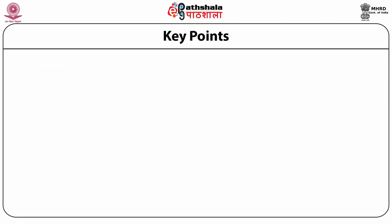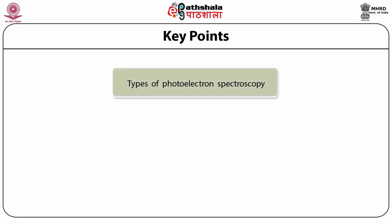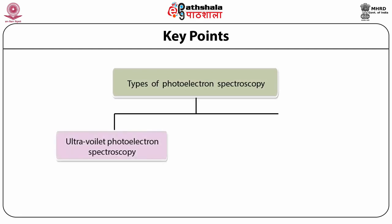Under the banner of photoelectron spectroscopy are two separate techniques for quantitative and qualitative measurements: ultraviolet photoelectron spectroscopy (UPS) and X-ray photoelectron spectroscopy (XPS). XPS is also known under its former name as electron spectroscopy for chemical analysis (ESCA). UPS focuses on ionization of valence electrons, while XPS is able to go a step further and ionize core electrons.